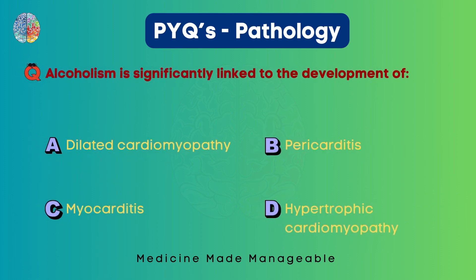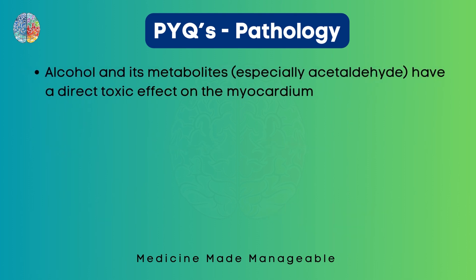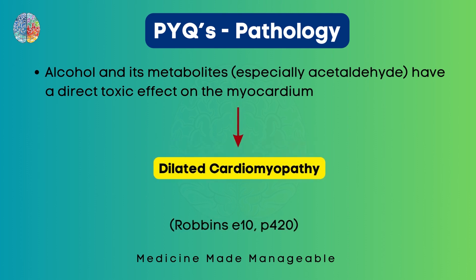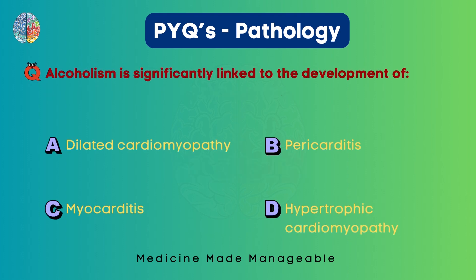Now: alcoholism is significantly linked to the development of dilated cardiomyopathy, pericarditis, myocarditis, or hypertrophic cardiomyopathy? Alcohol and its metabolites are actually very toxic to the heart muscle, and it is due to this that they cause dilated cardiomyopathy. So the answer is dilated cardiomyopathy.